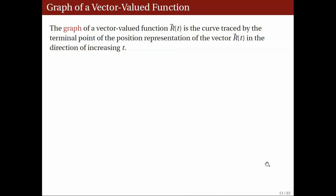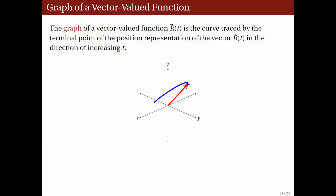Next, we define the graph of a vector-valued function. The image of t under vector-valued function r is a vector. As t varies, this vector also changes. Consider the position representation of this vector — the one with initial point at the origin. We consider the terminal point of this vector. As t increases and the vector changes, the terminal point traces out a space curve. This space curve is what we define to be the graph of the vector function r.